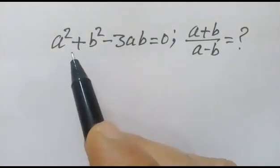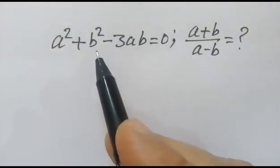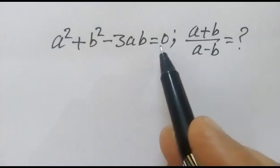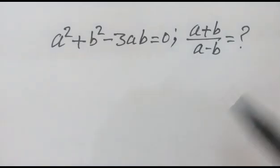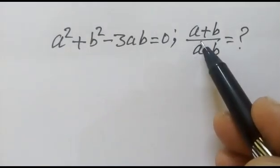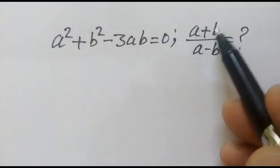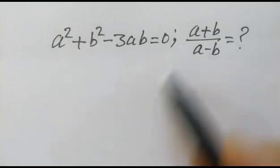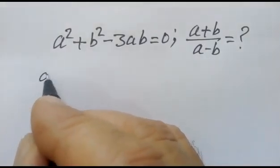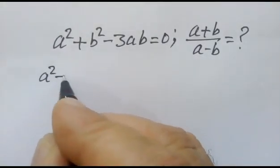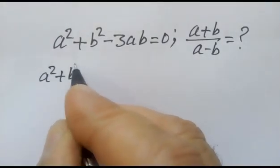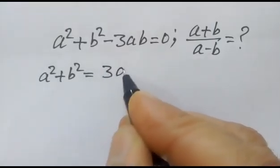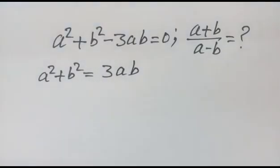Hi friends, we have given a squared plus b squared minus 3ab is equal to 0, and we have to find out the value of a plus b over a minus b. So a squared plus b squared is equal to 3ab.